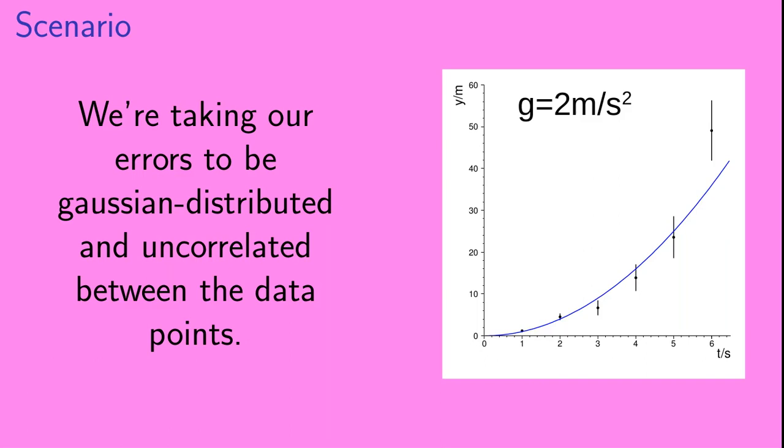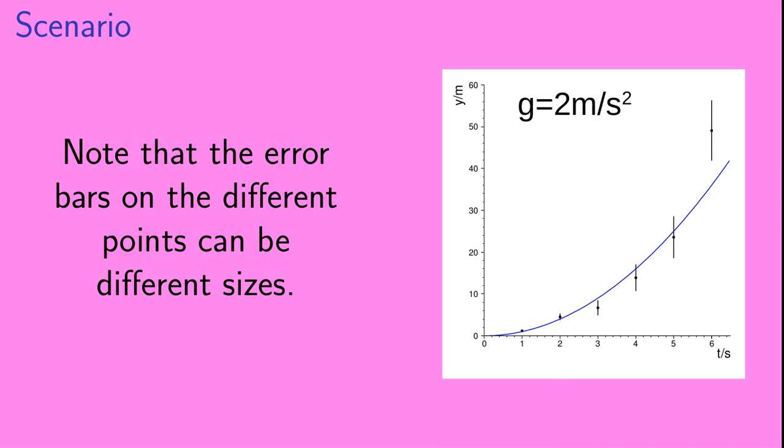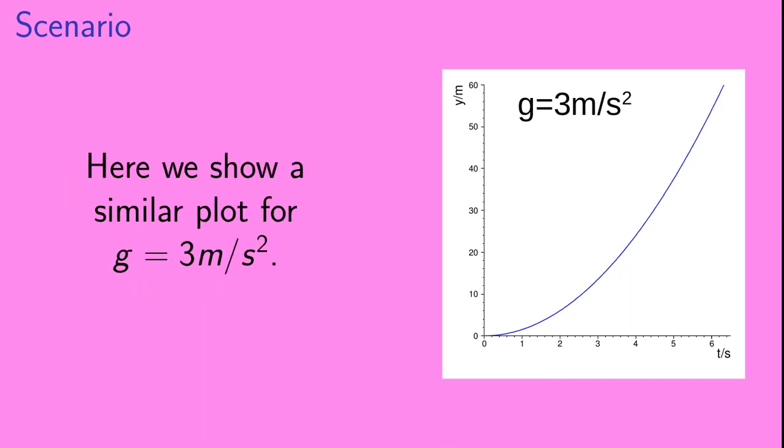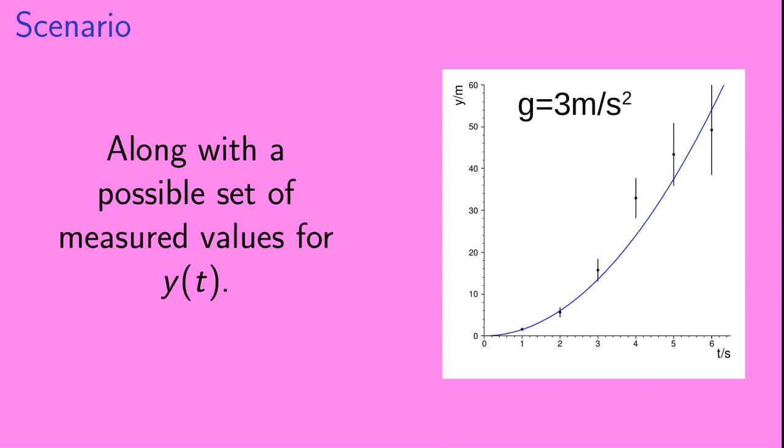We are taking our errors to be Gaussian distributed and uncorrelated between the data points. And it's important to note that the error bars on the different points can be different sizes. Alternatively, here we show a similar plot of the function y of t for the case where g is equal to 3 meters per second squared. And here is a possible set of measured values which we could acquire if we were to measure y of t under that scenario.